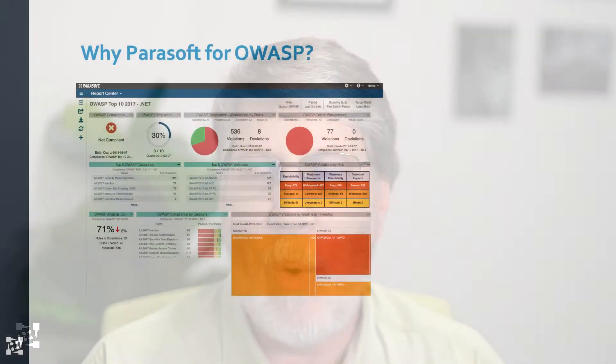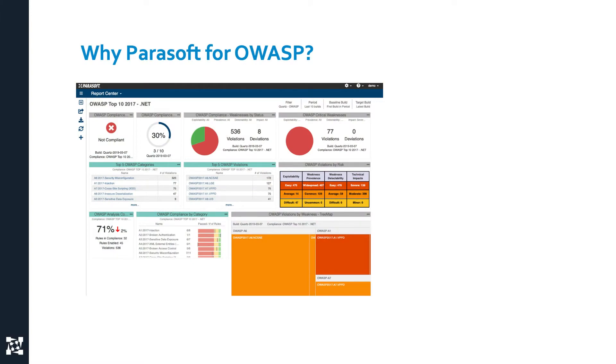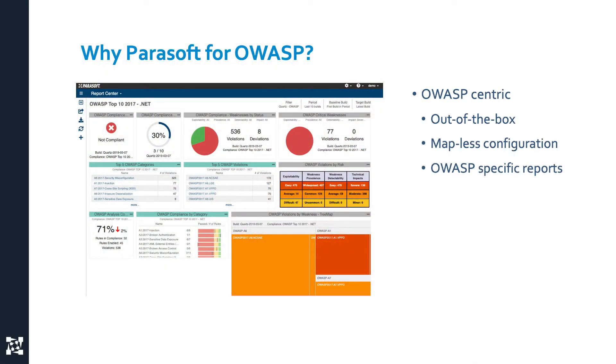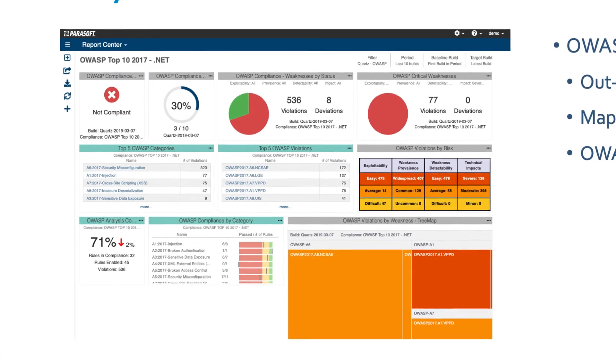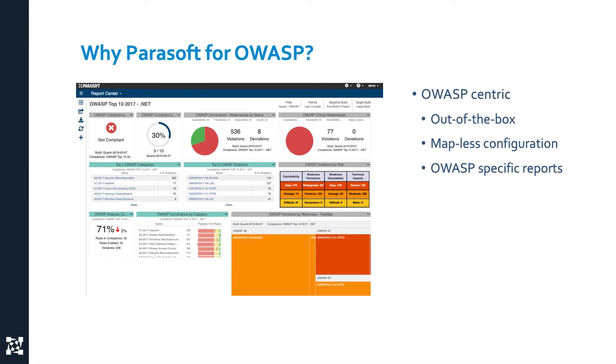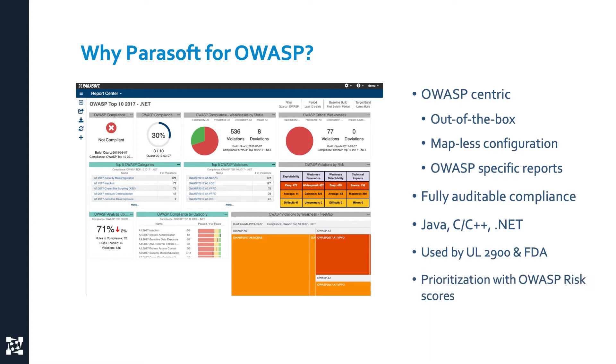Now I want to talk about why you would use Parasoft for your OWASP Top 10. With Parasoft we're OWASP centric. Right out of the box you can select an OWASP Top 10 configuration knowing that each of the 10 items has been covered by one or more checkers. Instead of having to scour through documentation to figure out which obscure checker name applies to which item in the standard, we've handled all of that for you. We have OWASP-specific reports designed around demonstrating compliance and surviving an audit. We support Java, C, C++, and .NET, and we support using the risk and prioritization model that's part of the OWASP Top 10 project.